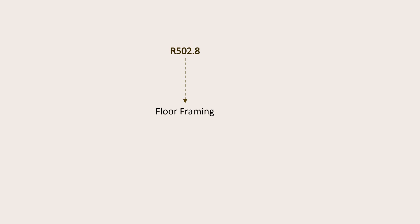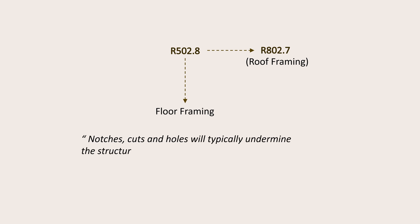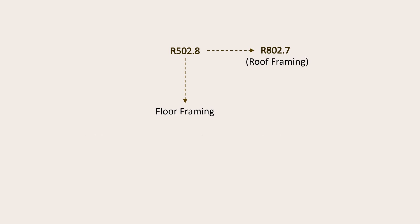Let us begin with Section R-502.8, which covers the prescriptive guidelines on notches, holes, and cuts on floor framing members. These requirements also apply to roof framing members as specified in Section R-802.7. Notches, cuts, and holes will typically undermine the structural integrity of wood framing members. Therefore, the limitations and guidelines in the International Residential Code are intended to ensure that the negative effects resulting from these actions are as minimal as possible.